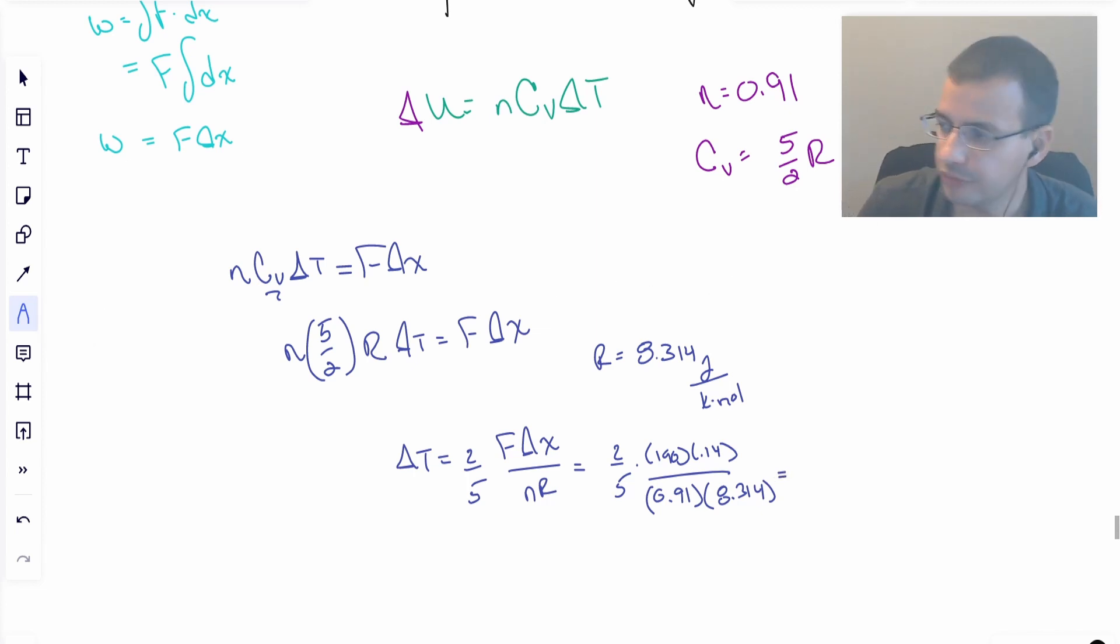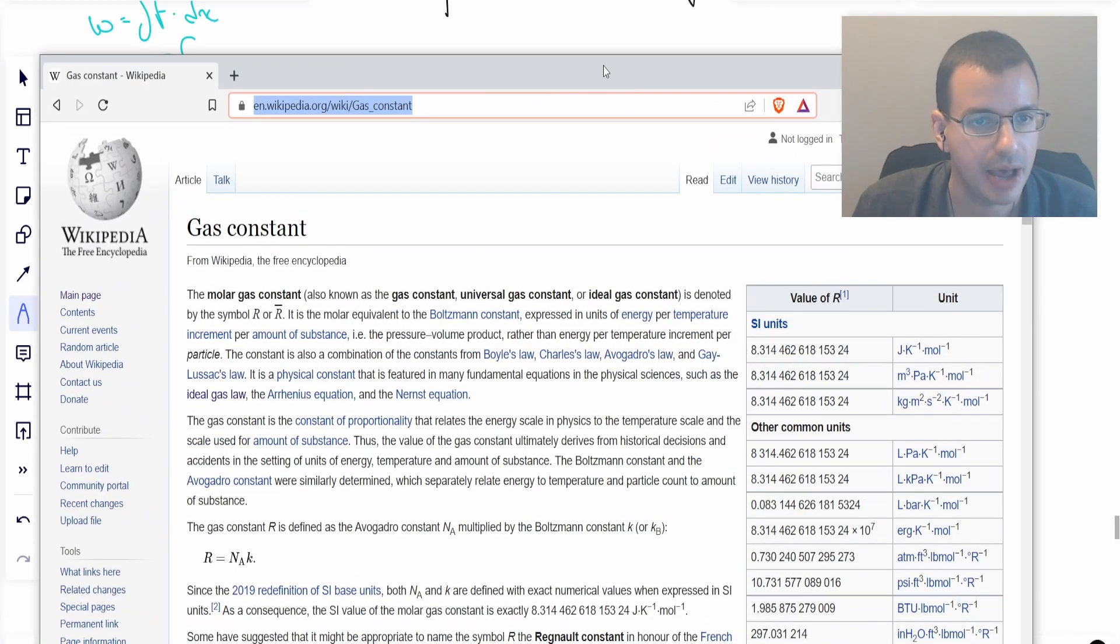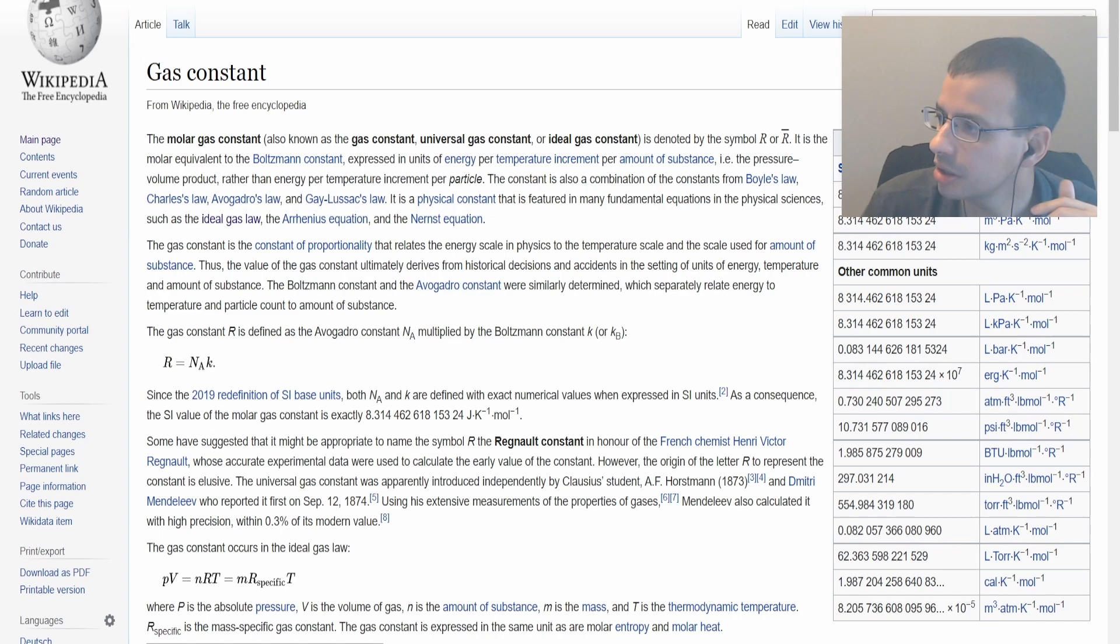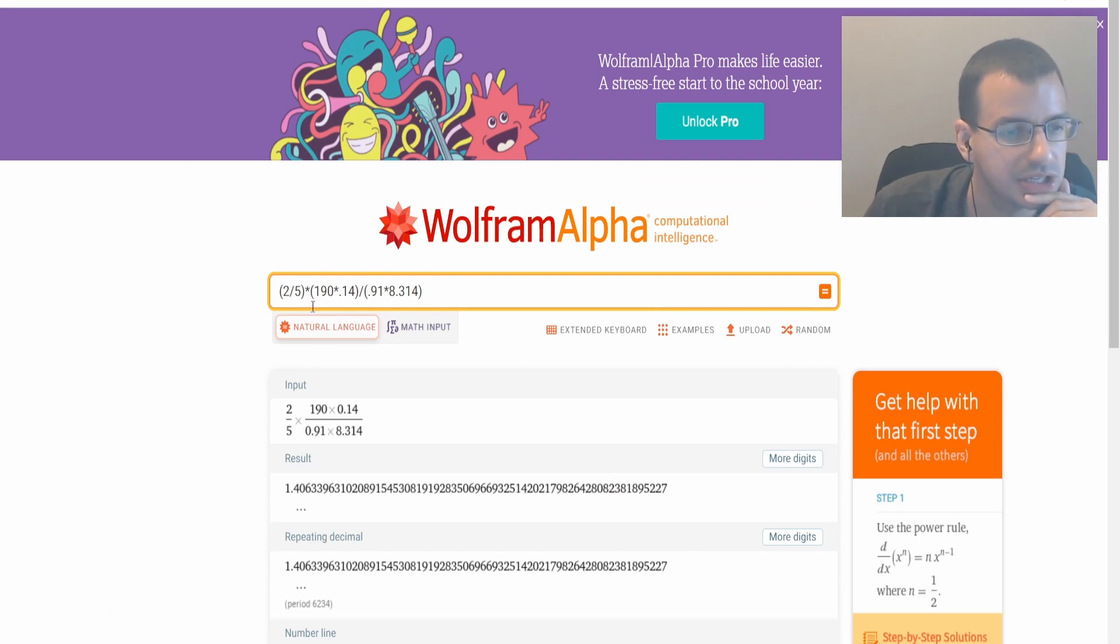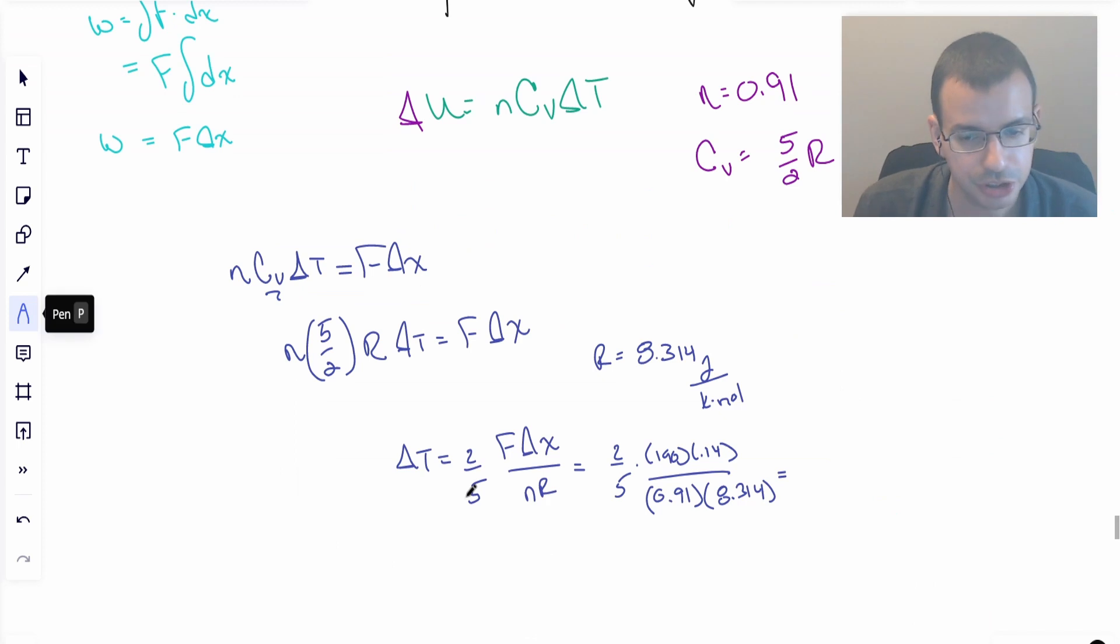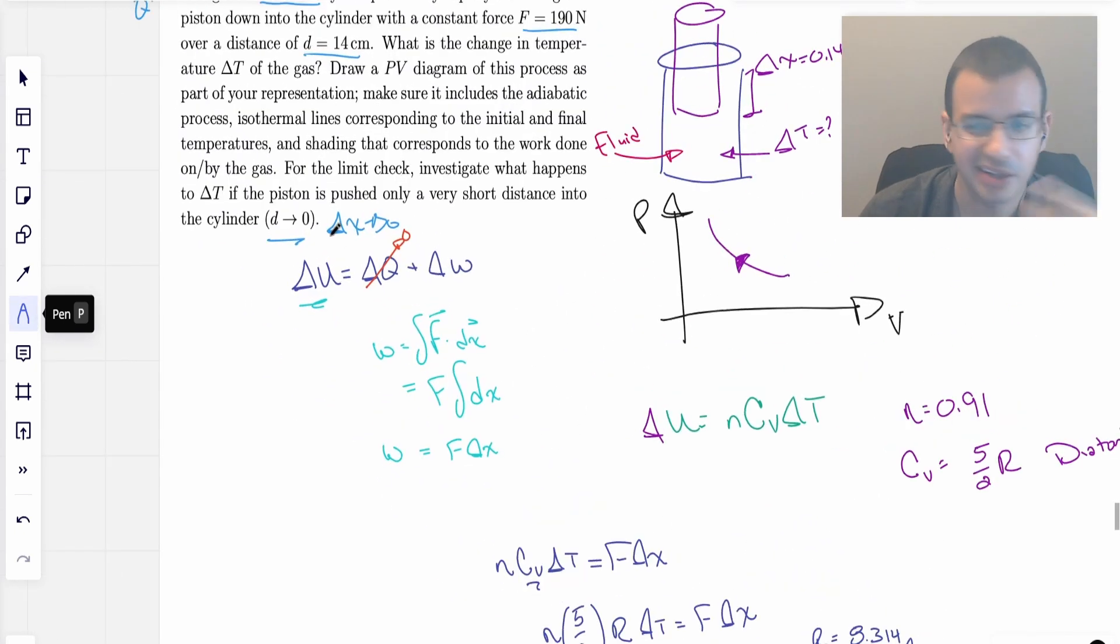Going over to Wolfram, we'll do 2 divided by 5 multiplied by the numerator divided by the denominator. Our numerator is 190 times 0.14, and our denominator is 0.91 multiplied by 8.314. We get an answer of about 1.4. We'll say 1.4 degrees Kelvin, which Kelvin is just a different starting point than Celsius. When you look at delta T, Kelvin and Celsius are the same. In this case, Celsius is going to be 1.4 degrees Celsius, maybe 3 degrees Fahrenheit.